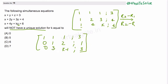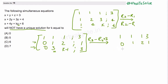Now we make the 3 in row 3 become zero by subtracting 3 times R2 from R3 — that is R3 minus 3 times R2. The result is: row 1 is 1, 1, 1, 3; row 2 is 0, 1, 2, 1; row 3 becomes 0, 0, and k minus 1 minus 3 times 2, which simplifies to k minus 7.